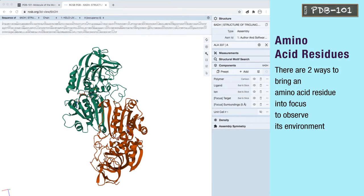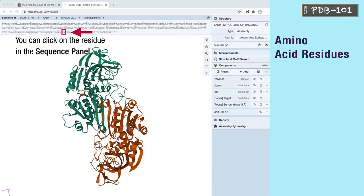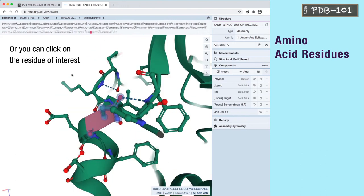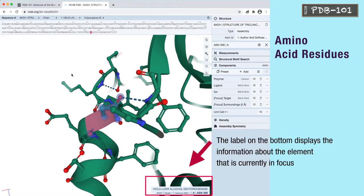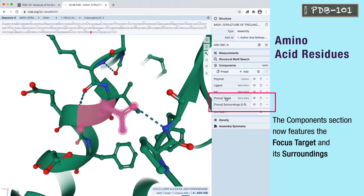There are two ways to bring an amino acid residue into focus to observe its environment. You can click on the residue in the sequence panel or you can click on the residue of interest in the viewport. Either action will bring the residue into focus. The label on the bottom displays information about the element that is currently in focus. The component section now features the focus target and its surroundings.